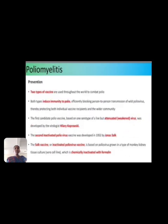For prevention, two types of vaccines are used throughout the world against polio. Both types induce immunity to polio effectively, blocking person-to-person transmission of wild poliovirus, thereby protecting both individual vaccine recipients and the broader community. The first oral polio vaccine, based on live attenuated virus, was developed by virologist Hilary Koprowski. The second, the inactivated polio vaccine, was developed by Jonas Salk in 1952, grown in monkey kidney tissue culture and chemically inactivated with formaldehyde.